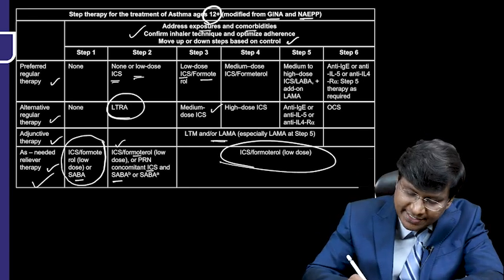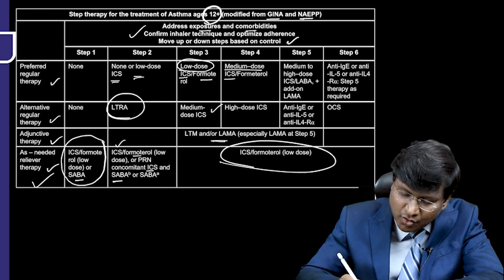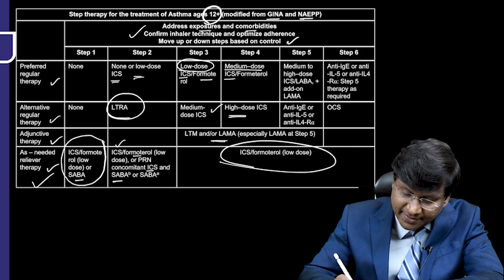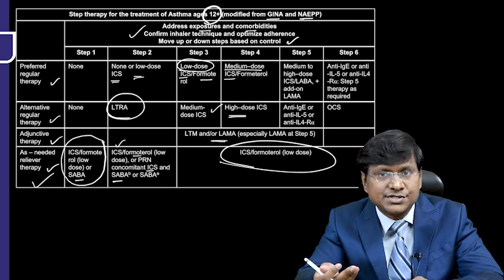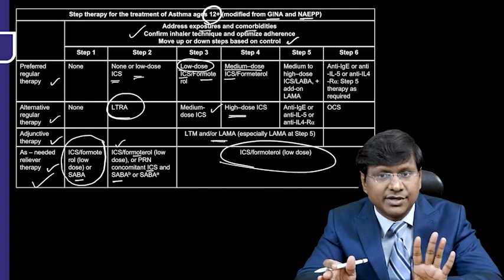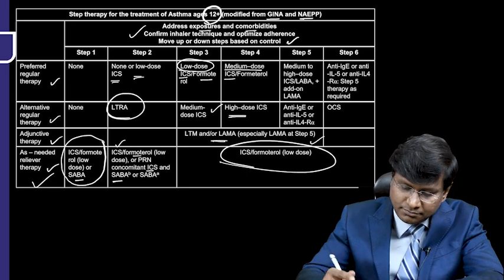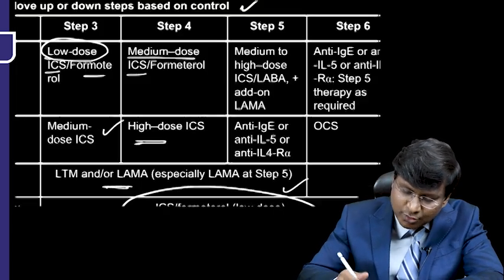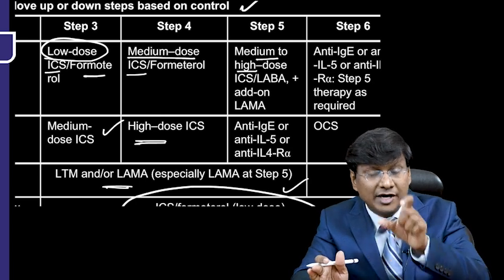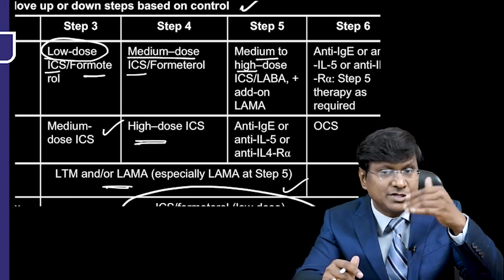In Step 4, medium-dose inhaled corticosteroids are the required regular therapy, and the alternative regular therapy is high-dose inhaled corticosteroids. The adjunctive therapy is the same as Step 3. In Step 5, the dose of inhaled corticosteroids is increased further, with intensification of inhaled corticosteroid therapy being the key principle, along with adding long-acting beta agonist and long-acting muscarinic antagonist.